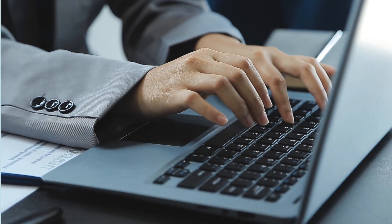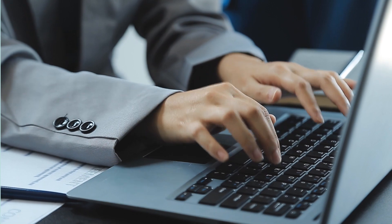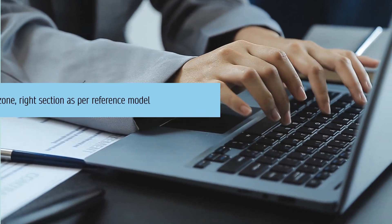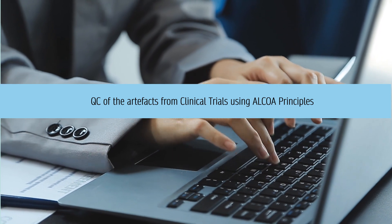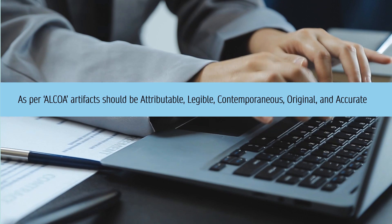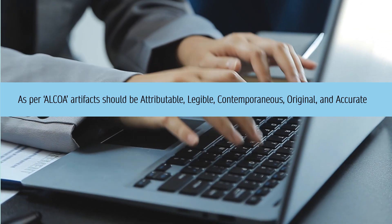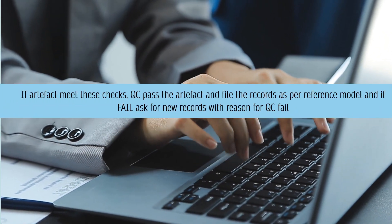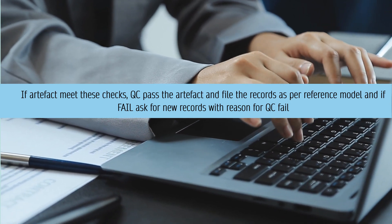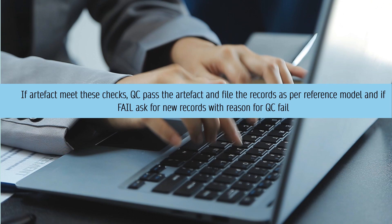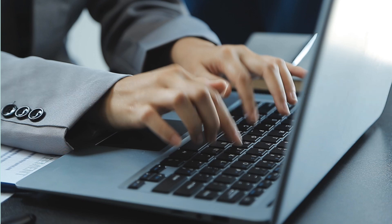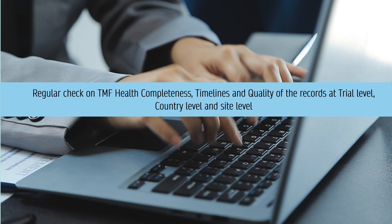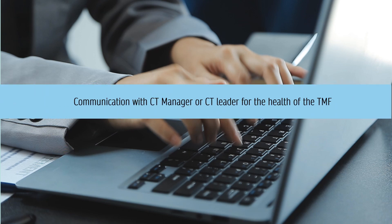Now you may be thinking about what your job would be if you join an ETMF project. You will file artifacts in the right zone and right section. You will be responsible for QC of artifacts from clinical trials using ALCOA principles. As per ALCOA, artifacts should be Attributable, Legible, Contemporaneous, Original, and Accurate. If an artifact meets these checks, QC passes it and files the records as per the reference model; if it fails, you ask for new records with a reason for QC failure. You will also be responsible for TMF health checks — checking records for completeness, timelines, and quality at trial, country, and site level. During your job, you will communicate with the CT manager or CT leader for any queries on records.